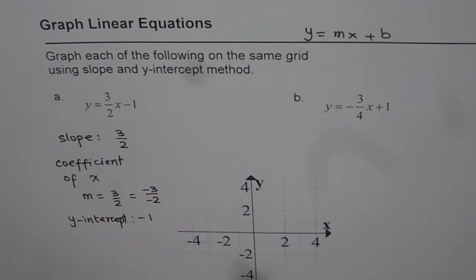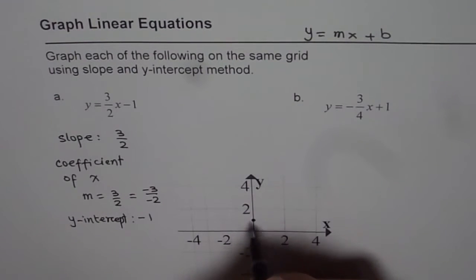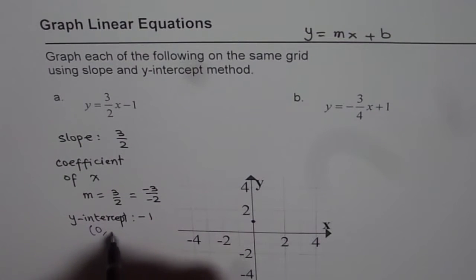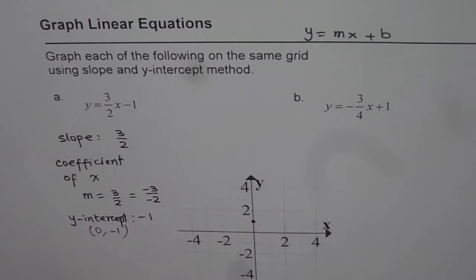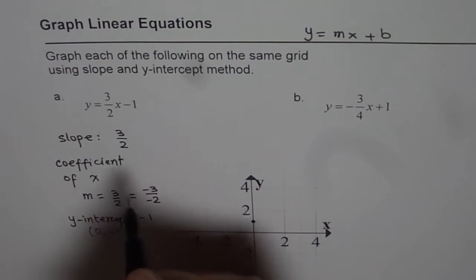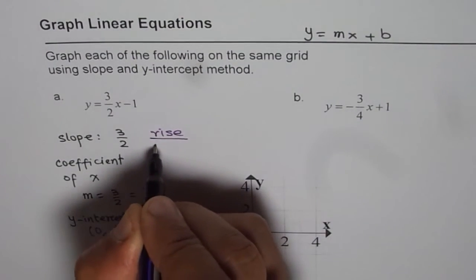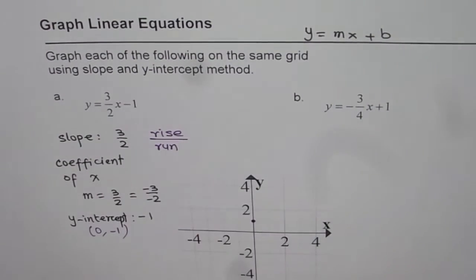We will use both of these parameters to sketch graph of this linear equation. Y-intercept is minus 1. That means a point on y-axis at y equals minus 1, x equals 0. Now we know the slope is 3 over 2. Slope is rise over run.